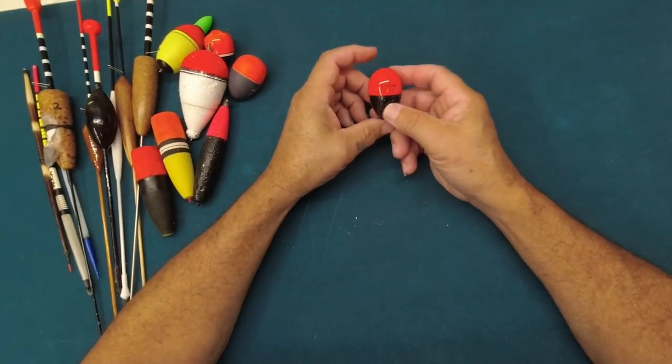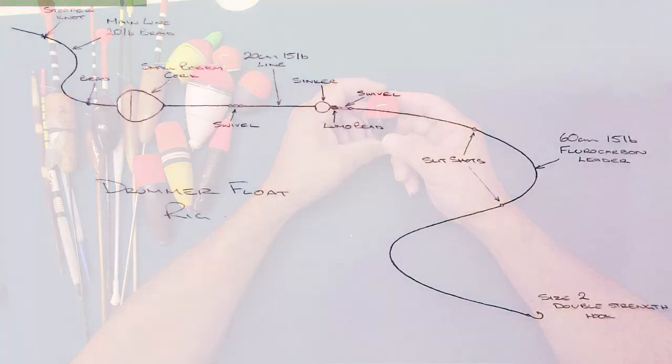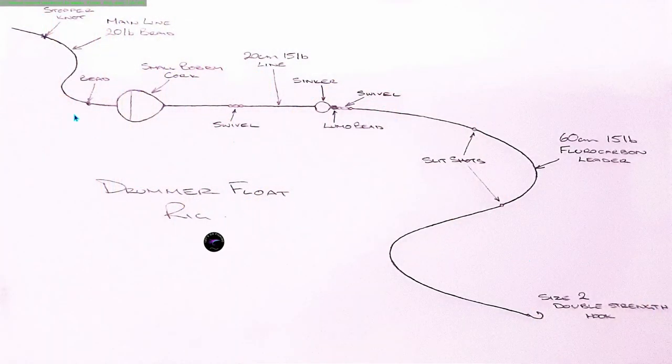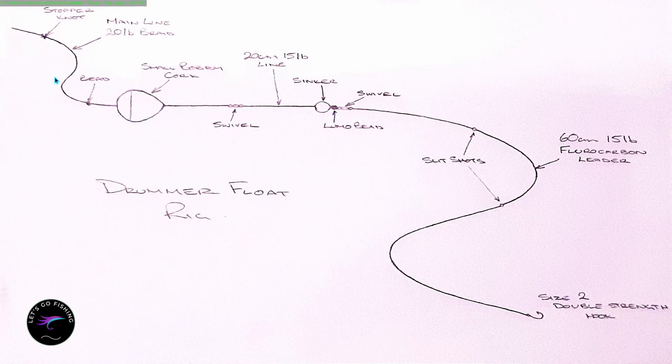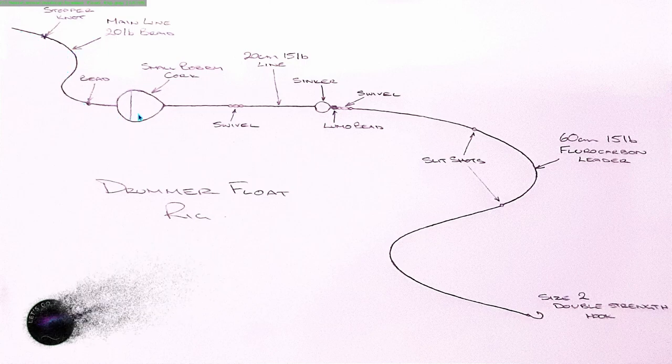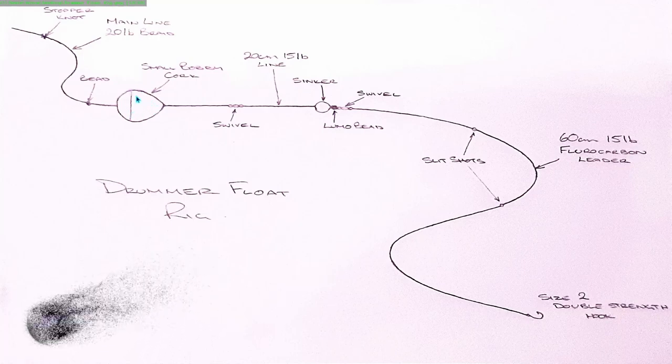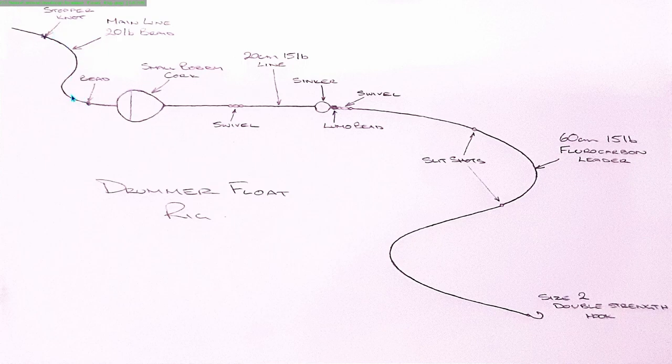For catching drummer, this is the way you rig up. This is my drummer float rig. It's a simple rig. I use 20 pound braid or mono going straight down to a swivel. I like using the ISO floats, a bobby cork or whatever you have like that, with a bead and a stopper knot sliding up and down to wherever you want. 20 centimeters of 15 pound line from swivel to swivel. On that I have a sinker weighted for that float and a lumo bead.